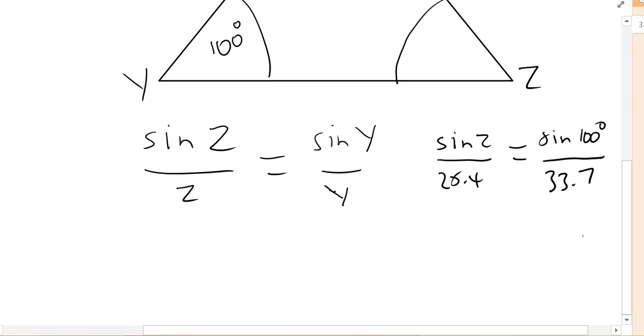Now we want to get sin z by itself so we'd multiply by 25.4 on both sides. So we end up with sin z equals 25.4 times sin of 100 degrees divided by 33.7.